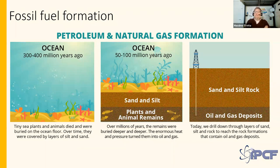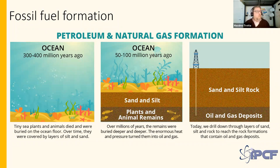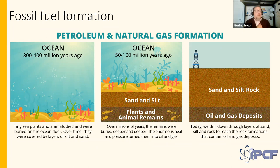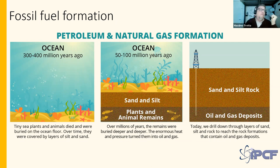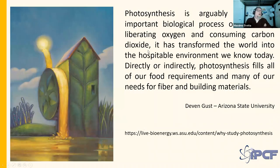Photosynthesis is also responsible for shaping Earth and for how we survive consuming energy. Roughly three to four hundred million years ago, a large number of trees, plants, and animals landed on the floor of oceans and in time were covered by sand and silt. Due to high pressure and high temperature, we got oil and natural gases — both directly bound to photosynthesis. There is an absolute need for substituting fossil fuels.